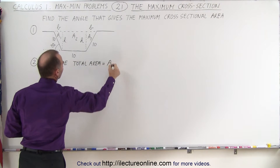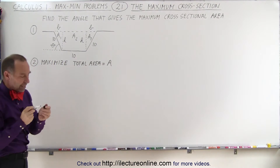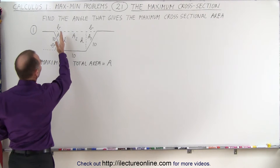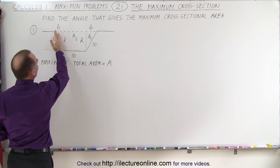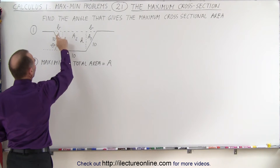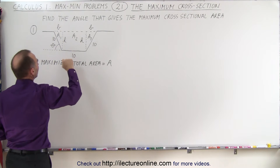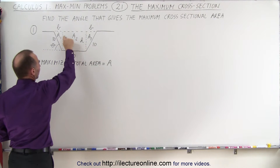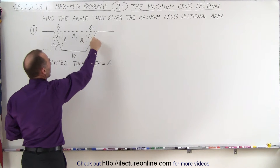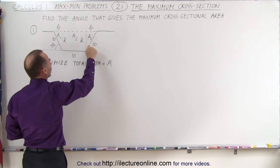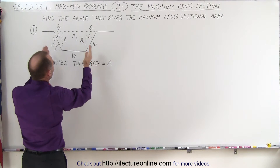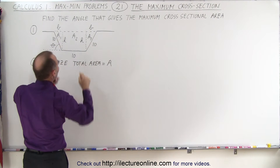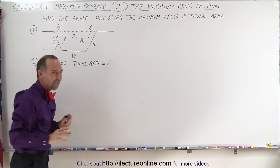We'll call the total area A. I've divided it into three sections: A1, which is the cross-sectional area of a triangular shape on the left; A2, which is the cross-sectional area of the rectangle in the middle; and A3, which is the cross-sectional area of the triangular shape on the right. We're assuming the angles are the same on both sides, so A1 and A3 have the same value.